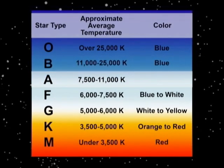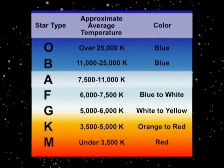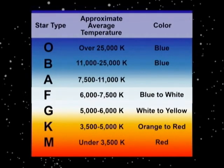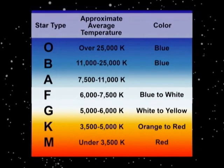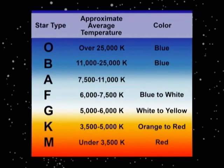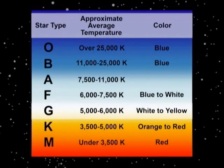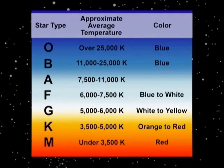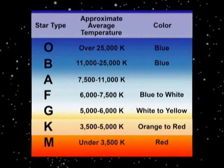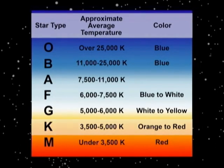A stars are also blue and have temperatures of 7,500 to 11,000 Kelvin. F stars have temperatures of 6,000 to 7,500 Kelvin, and their colors range from blue to white. G stars, having temperatures of 5,000 to 6,000 Kelvin, have colors of white to yellow. Then the K stars, with temperatures of 3,500 to 5,000 Kelvin, have orange to red colors.